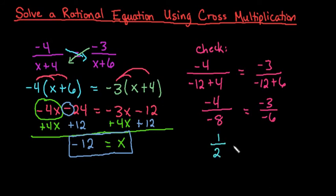And then both of this reduce to the same thing. Negative 4 over 8 reduces to 1 half. And negative 3 over 6 also reduces to 1 half. So since those are equivalent expressions, we know that x equals negative 12 is our answer.